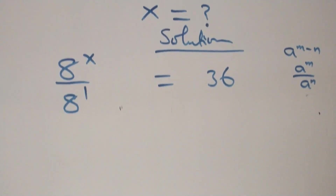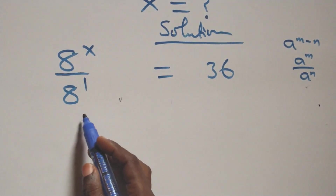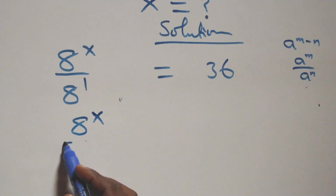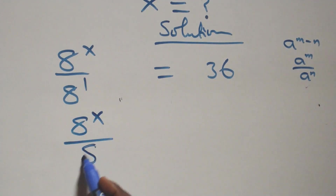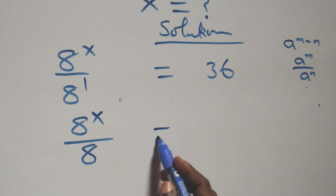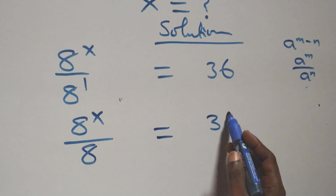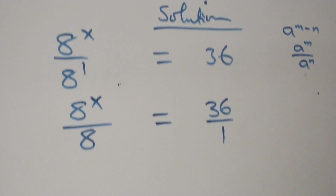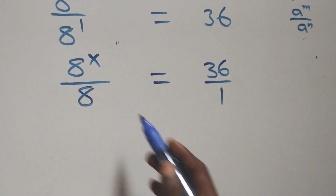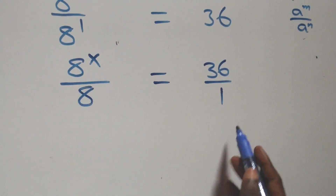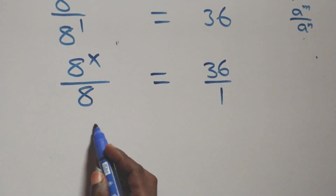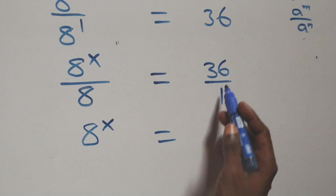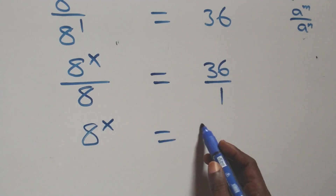We can write this as a raised to power x over a raised to power 1 plus 8, which equals 36 over 1. Cross multiplying, a raised to power x times 1, which is just a raised to power x, equals 36 times 8.